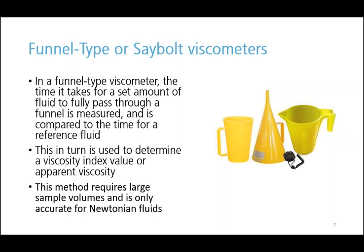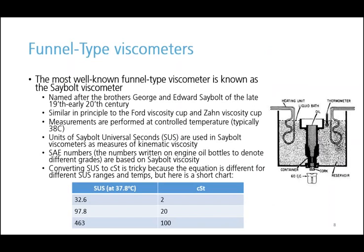Now the most well-known funnel type viscometer is known as the Saybolt viscometer. This viscometer was named after the brothers who invented it, George and Edward Seybold of the late 19th to early 20th century. There are two other similar viscometers you may have heard of — the Ford viscosity cup and Zahn viscosity cup — which operate on somewhat similar principles. The Saybolt viscometer is essentially a funnel type viscometer that operates at controlled temperatures. As you can see in the image on the right, you have a funnel surrounded by a temperature control bath and a 60 milliliter beaker underneath it to collect your fluid.